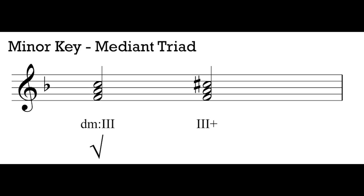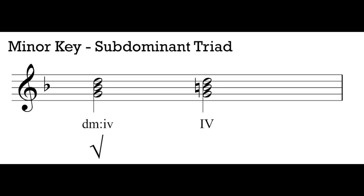Moving to our mediant triad built on scale degree 3, we again have two versions: one using C-natural from our natural minor scale, and one using C-sharp from our harmonic and ascending melodic minor scales. The natural one is a major triad — an F-major triad here. The one with C-sharp is an augmented triad, and we don't see that one too often. The major triad built on scale degree 3 is the one we see with the most frequency. For the subdominant, we also have two options: minor 4 using B-flat from our natural and harmonic minor scales, and major 4 from our ascending melodic minor scale. The minor version is much more common, so that's the one we'll focus on.